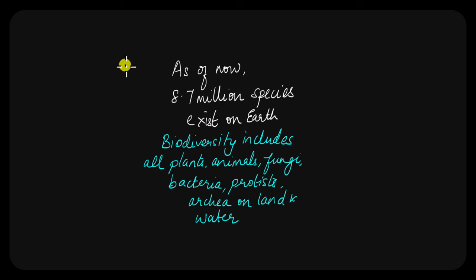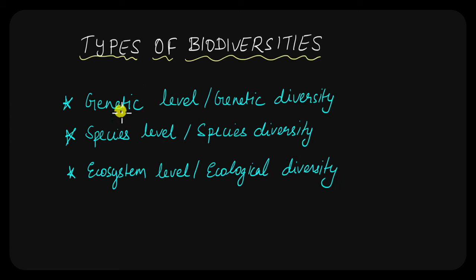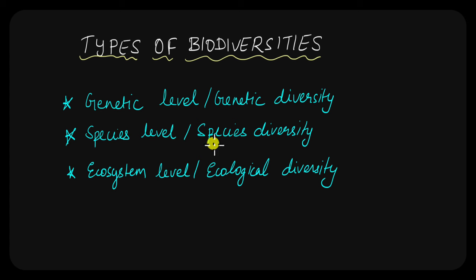This is what we are going to be talking about in this video. Like a lot of things you have studied so far, biodiversity also has some types by which we can characterize it. There are three types of biodiversity based on the level at which we are characterizing it. Starting at the genetic level gives us genetic diversity. Going up a level to the species level gives rise to species biodiversity. Up another level, we come across the ecosystem level, which gives rise to ecological biodiversity.